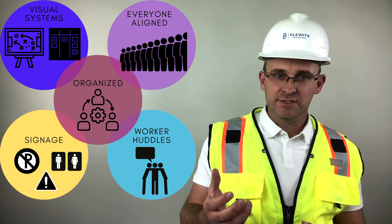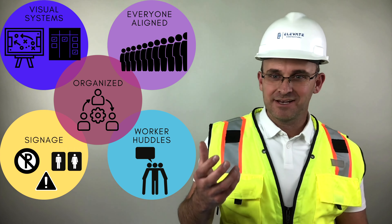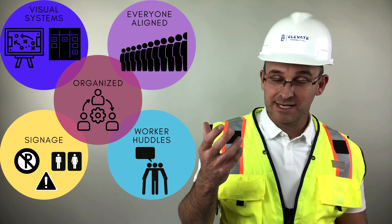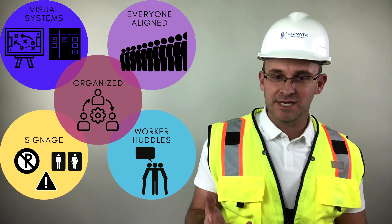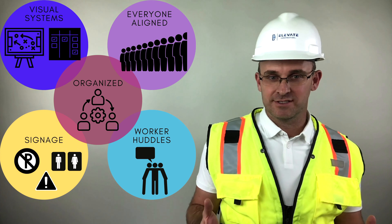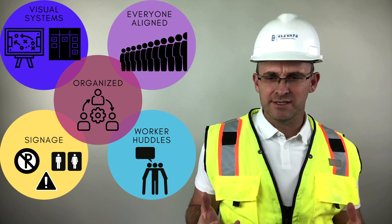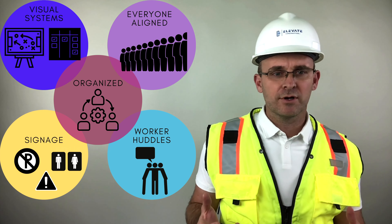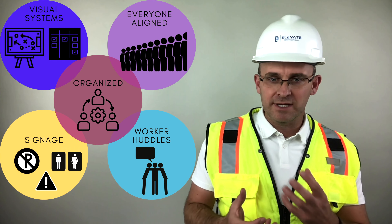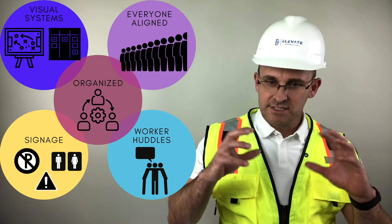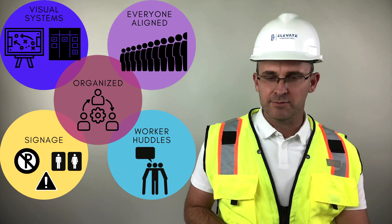Our visual systems and the plan — everyone knows the same plan, and it has been communicated to them in a remarkable manner, so everybody's on the same page. Even signage on site is a visual system that gets everybody aligned. And things like worker huddles, foreman huddles — huddles that bring everybody to a similar understanding of the plan and those visual systems. It's quite remarkable.